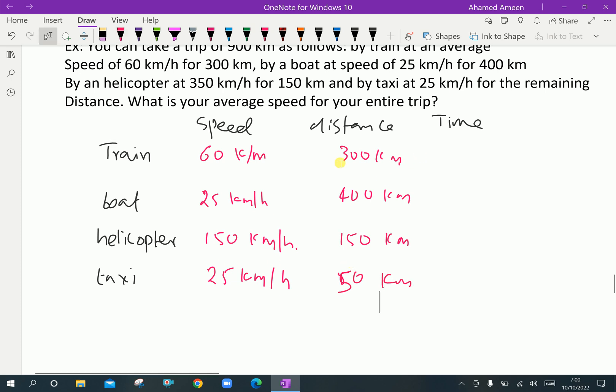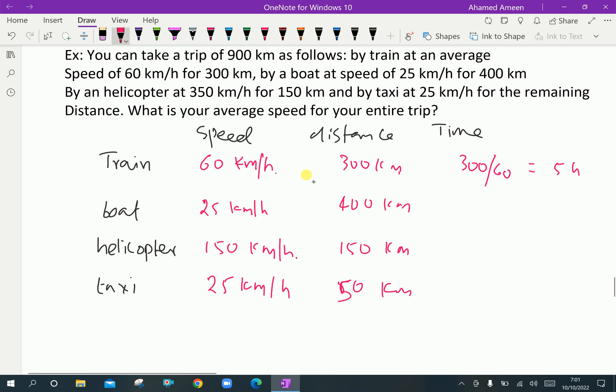Now, we have to calculate time for each travel. Here, speed times distance is, distance by speed. Distance by speed is time. Distance by speed. Distance is, here, 300 divided by 60. It is equal 5 hours. Here, 400 divided by 25 is 16 hours.